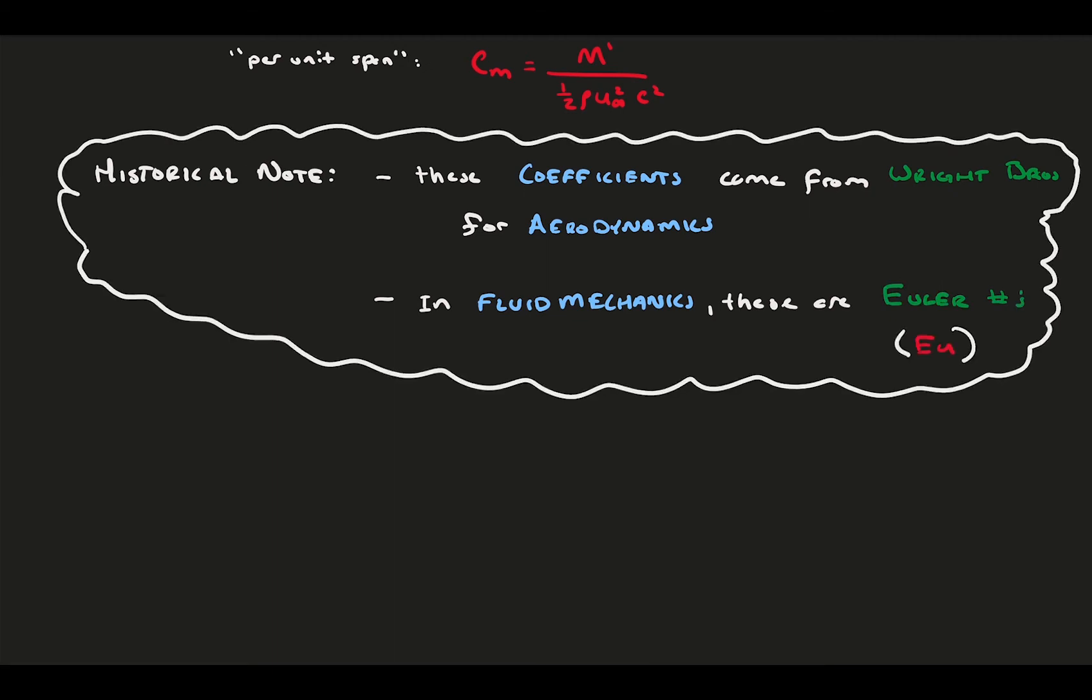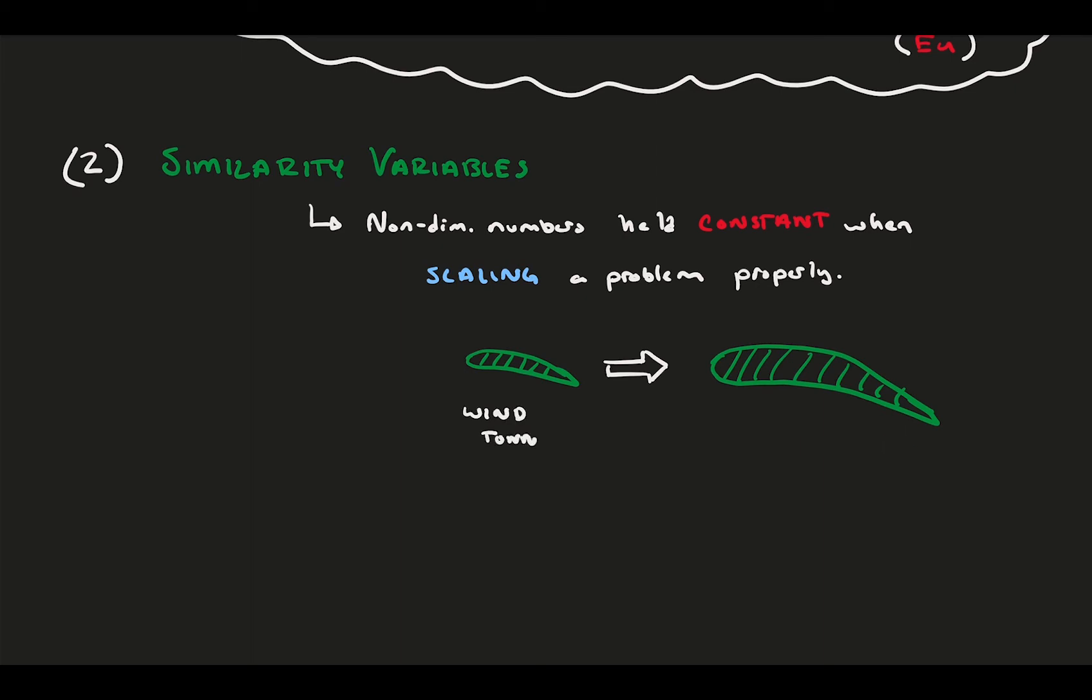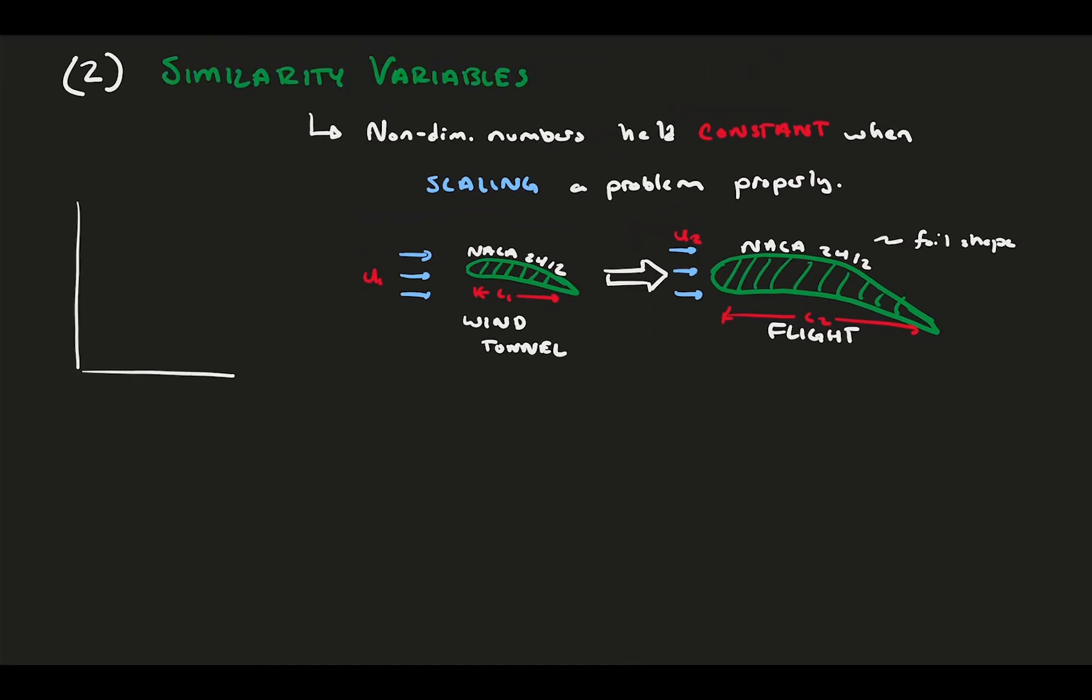Now, it may seem like we've only taken dimensions out of our problem, but what we've done is a bit more useful than that. What we've done is make a similarity variable out of these quantities. In aerodynamics, similarity variables are non-dimensional numbers that must be held constant when scaling a problem. This ensures that when you scale a problem from one size to another, you can still compare those two scales accurately. Consider a wing in a wind tunnel. Our aim is to recreate its behavior in flight, but we have to do that at a different size foil and a different velocity due to our facility limitations.